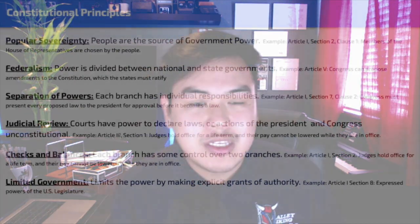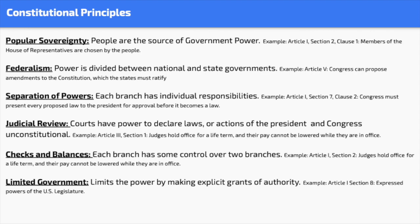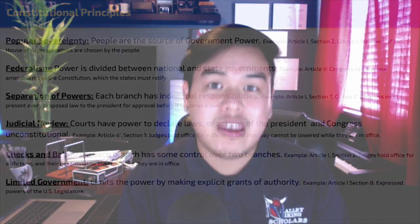Federalism is a system in which the national and state governments work together. National, state, county, city, special purpose districts — they all work together. It's not just one entity controlling everything; it's the federal and the state governments working together.